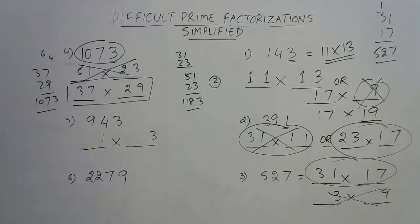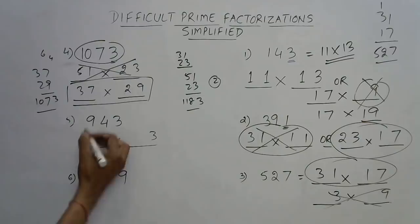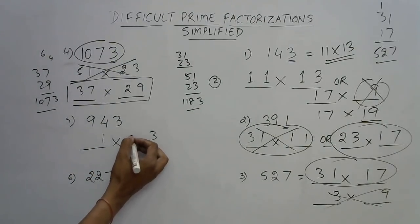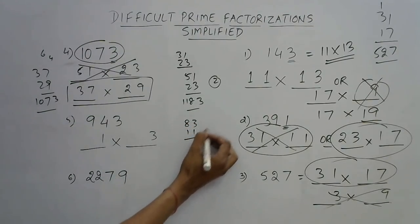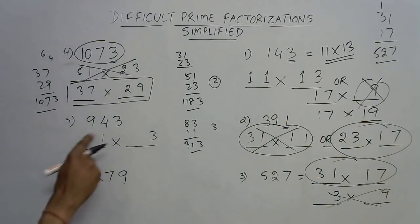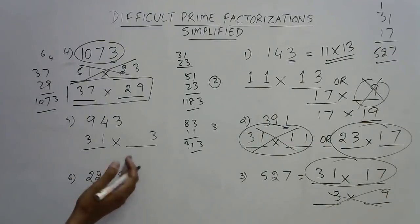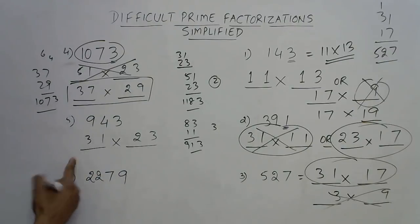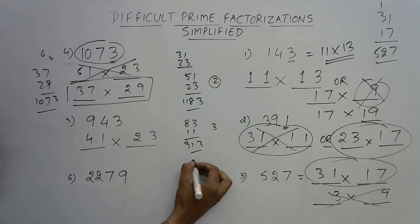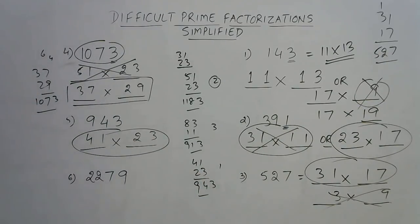Next, 943 — unit digit is 3, so again options end with 1 and 3, or 7 and 9. Using 11 × 43 = 473 — too small. 11 × 53 = 583 — still less. 11 × 83 = 913 — close but not right. So increase the first factor. 21 is not prime; try 23 and 41: 41 × 23 = 943. That's the prime factorization of 943.